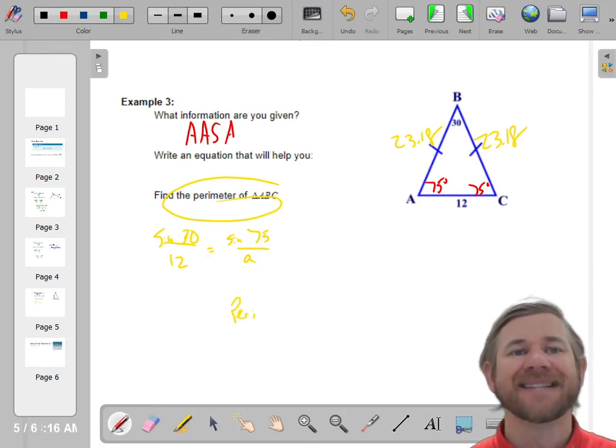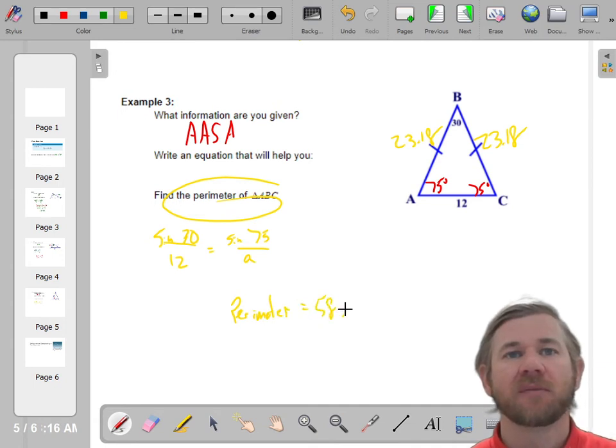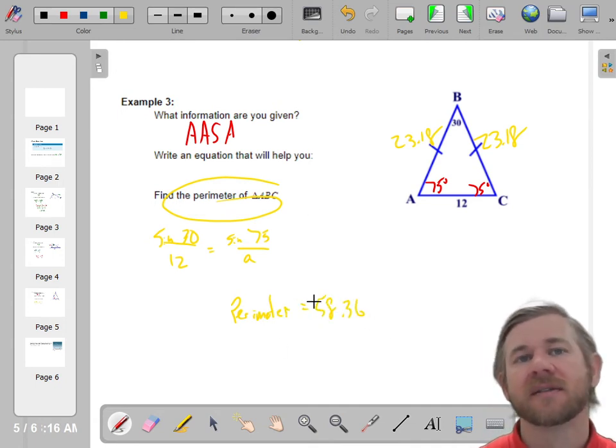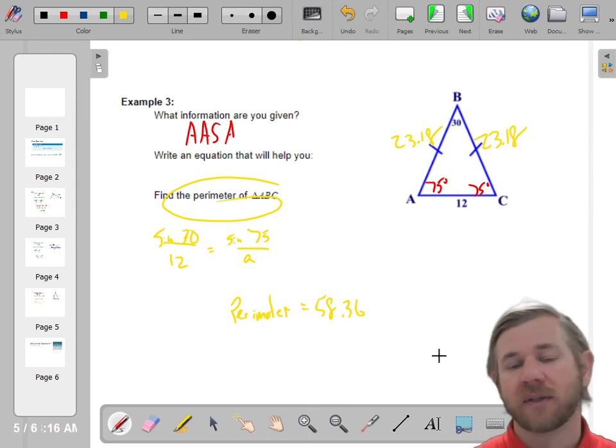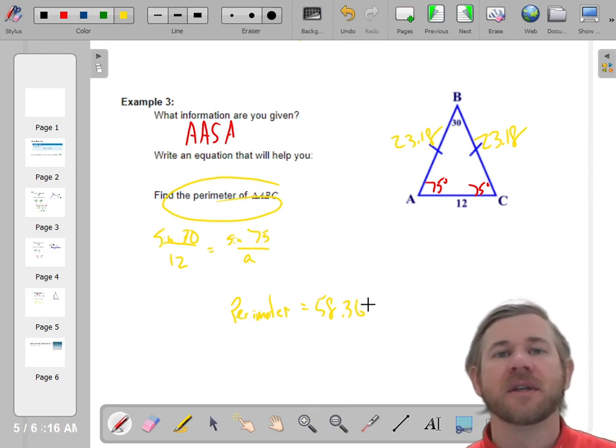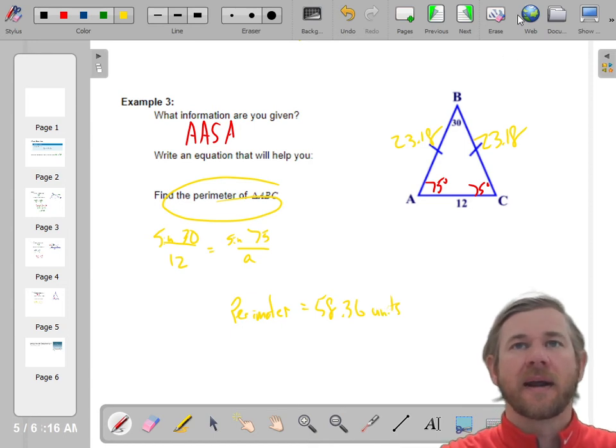Perimeter is 58.36 and we're not giving units. So I'm not going to, it's just units. It's a length. So we'll say units. That's fine. All right.